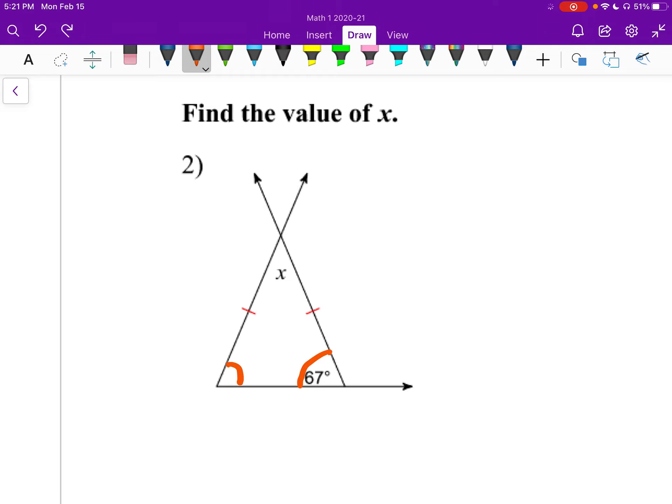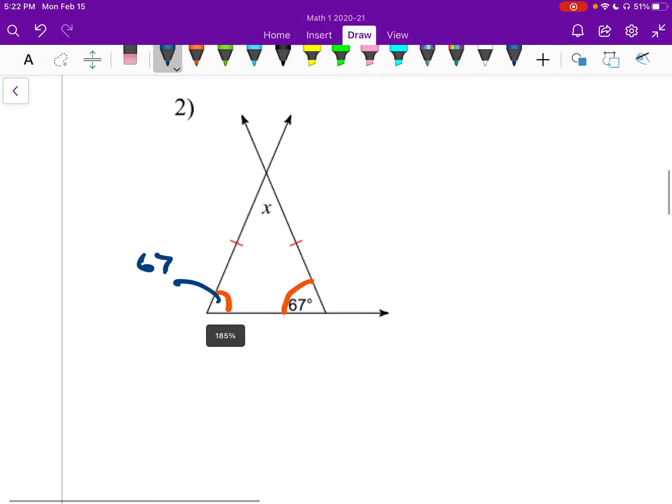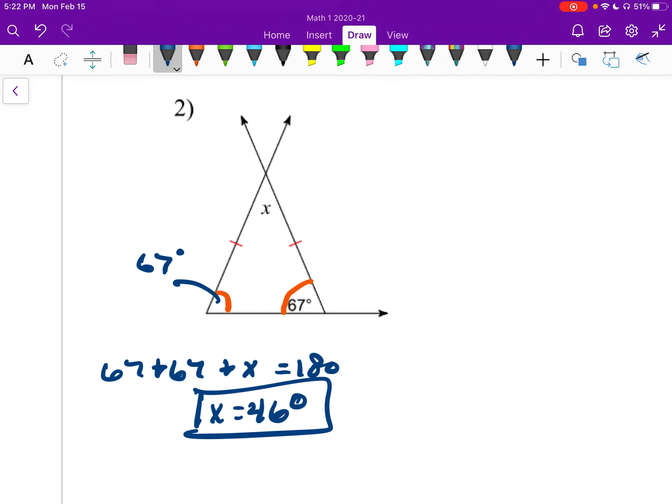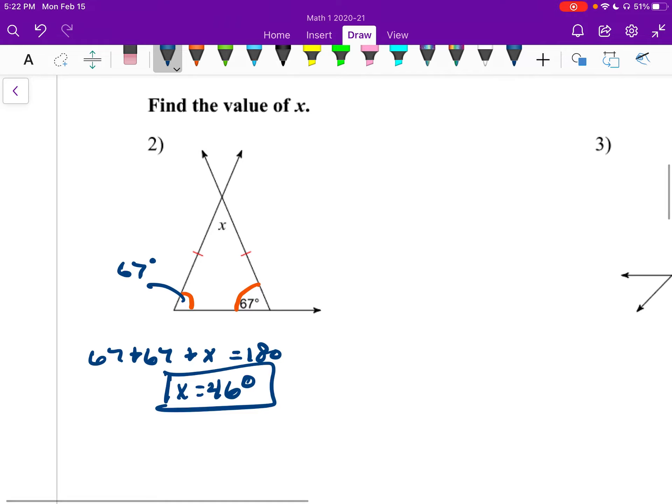So that tells me that this has to be 67 degrees. Now I can say, well, I can add all these up and set them equal to 180. So 67 plus 67 plus x is 180. And whenever I subtract, I'll take 180 minus 67 minus 67, I get 46. There we are. That's our angle.